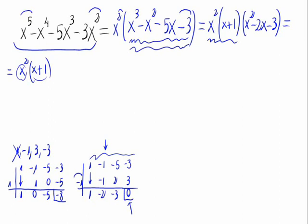Using Ruffini again, we try with minus 1: 1, minus 2, minus 3. Minus 1 times 1 is minus 1, minus 2 plus minus 1 is minus 3, minus 3 times minus 1 is 3, minus 3 plus 3 is 0. So it would be x minus minus 1, which is x plus 1, times x minus 3.